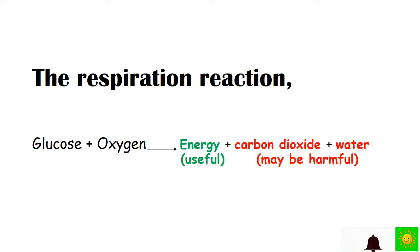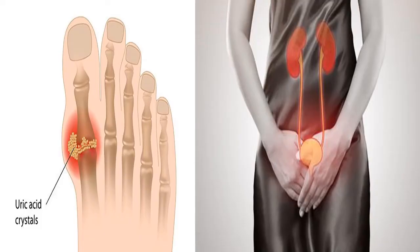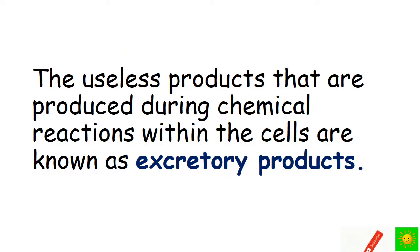Carbon dioxide and water will be harmful when present in excess amounts — that is why they may be harmful, while energy is useful. The useless products that are produced during chemical reactions within the cells are known as excretory products.